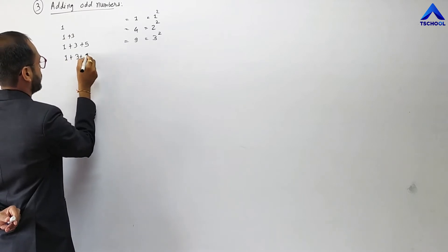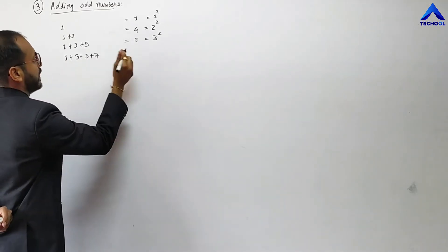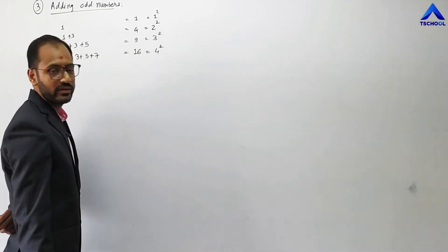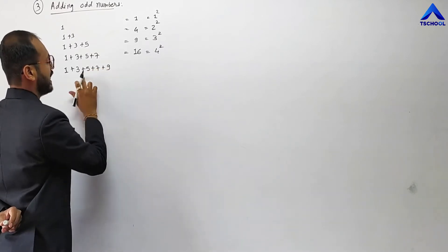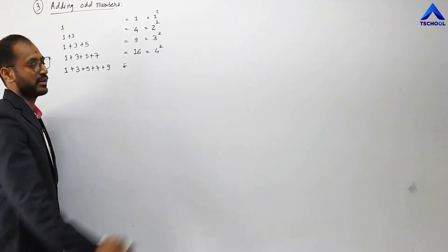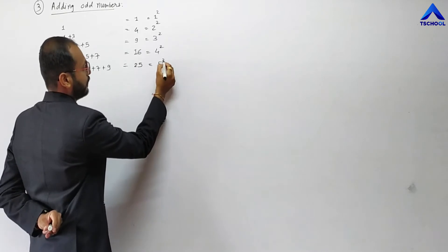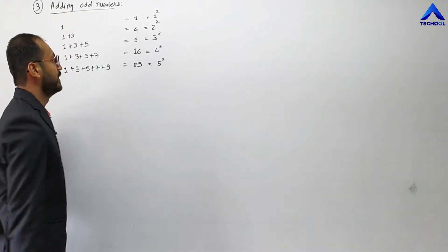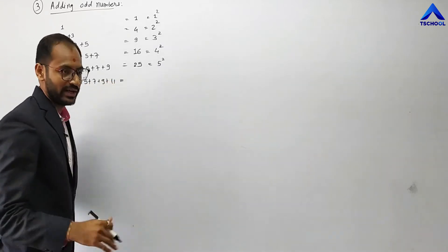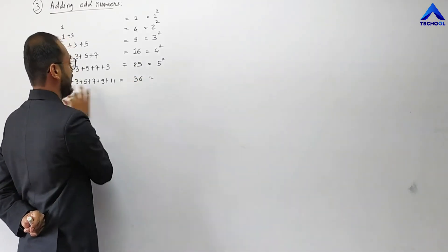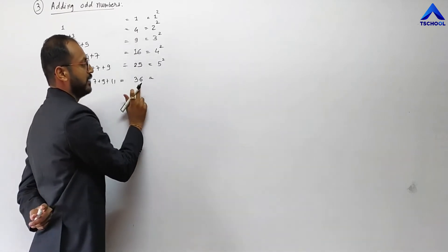If I add 1 plus 3 plus 5 plus 7, this addition gives the next complete square number, which is 16. If I add 1 plus 3 plus 5 plus 7 plus 9, that addition gives 25, which is the perfect square of 5. If I add 1 plus 3 plus 5 plus 7 plus 9 plus 11, the next perfect square number is 36. By adding consecutive odd numbers, we always get a perfect square number.